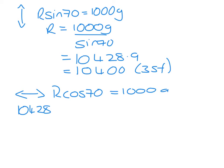You can't use the 10,400 because that's been rounded and we would lose accuracy, so I'm going to use my pre-rounding answer. 10,428.9 equals 1000A.